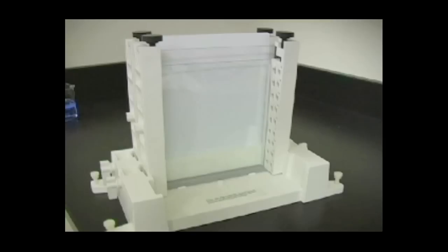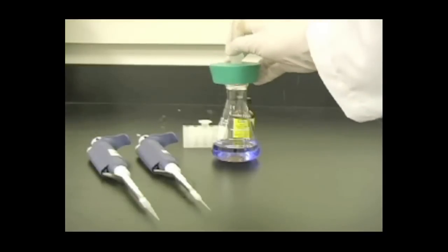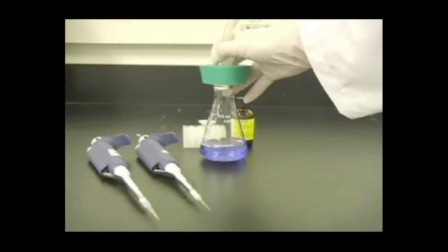Assemble the gel sandwiches and secure them in the casting stand. Prepare the monomer solution according to instructions. Degas under vacuum for at least 15 minutes.